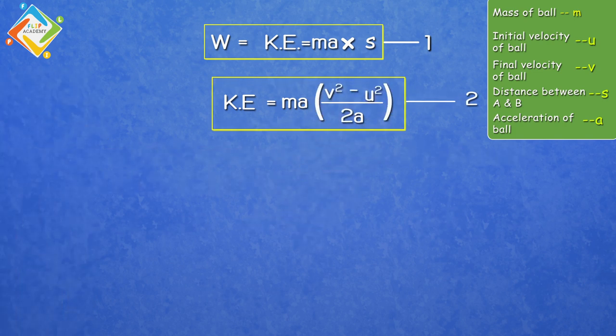Put this value of S in equation number 2. When you put the value, the equation becomes kinetic energy equals M into A into V square minus U square upon 2A. A cancels in numerator and denominator. And the kinetic energy formula becomes M into V square minus U square upon 2.